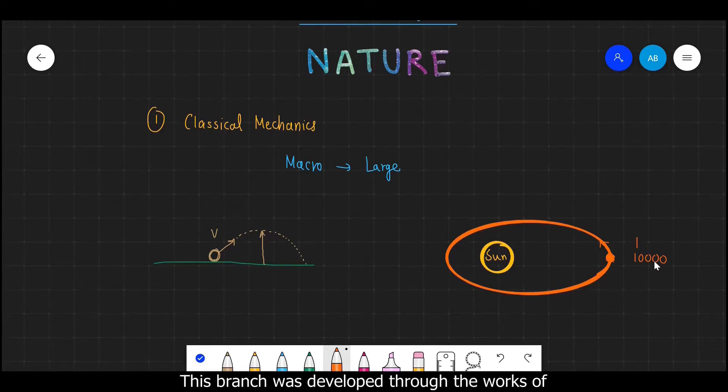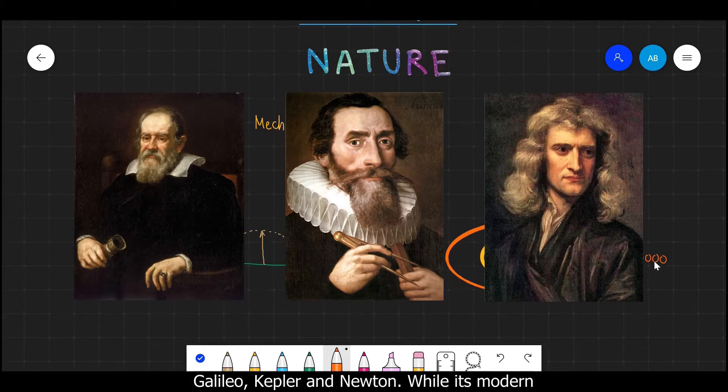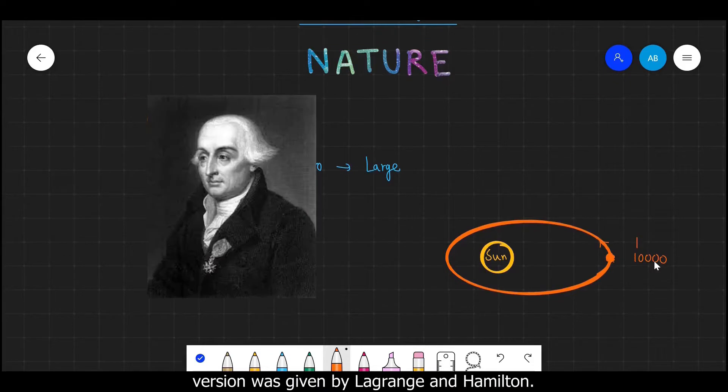So this kind of power of predictions of such large scale objects is achieved through Classical Mechanics. This branch was developed through the works of Galileo, Kepler and Newton, while its modern version was given by Lagrange and Hamilton.